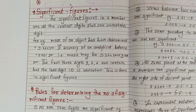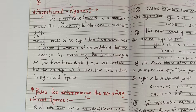Significant figures are all the certain digits plus one uncertain digit. The specific definition of significant figure is that there will be certain digits, and along with that there will also be one uncertain digit. Let's understand this properly.